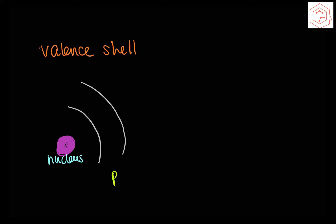Electrons have potential energy due to their attraction to the protons in the nucleus and their position in the atom. If you have an electron in the first energy level and want to move it to the second energy level (the valence shell), energy needs to be absorbed. Conversely, moving from the second energy level back to the first energy level requires that energy be released.